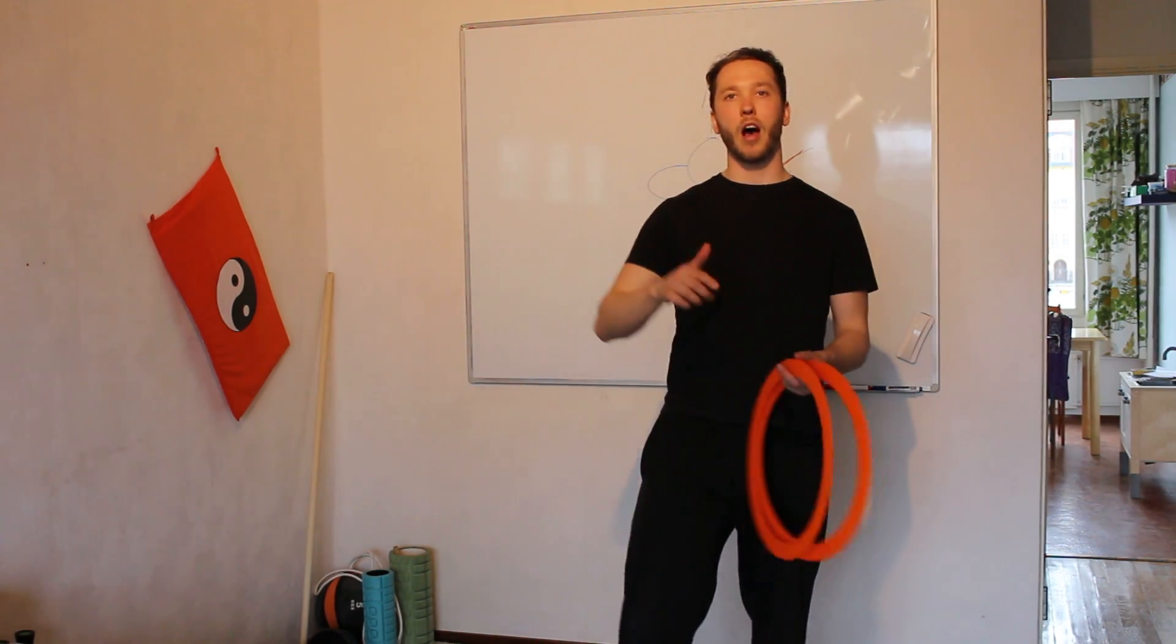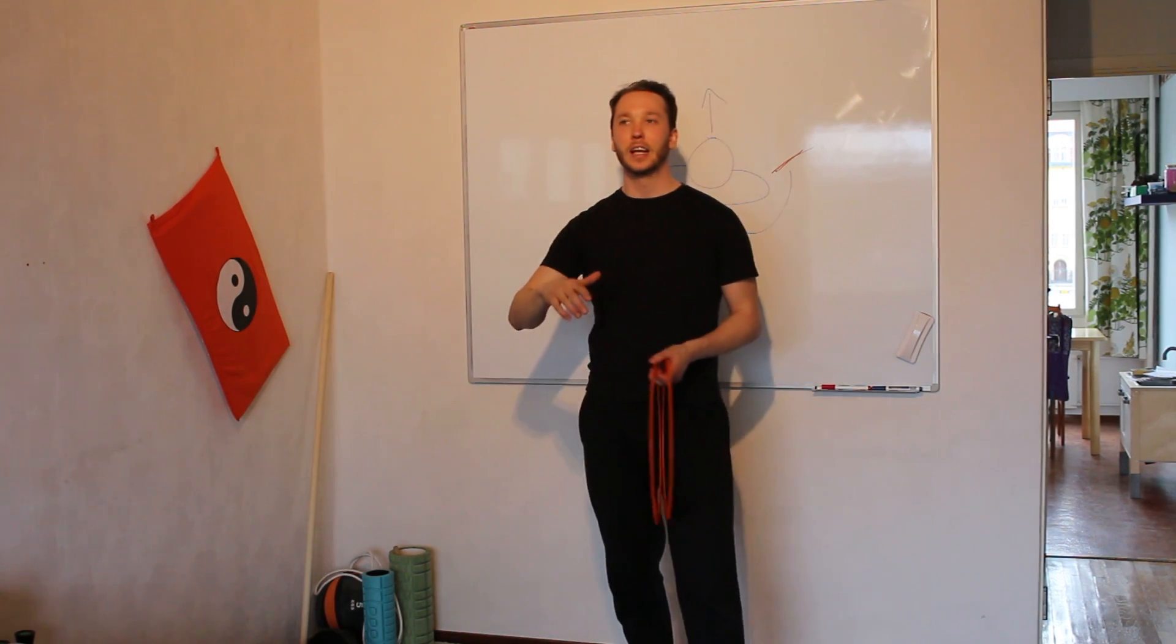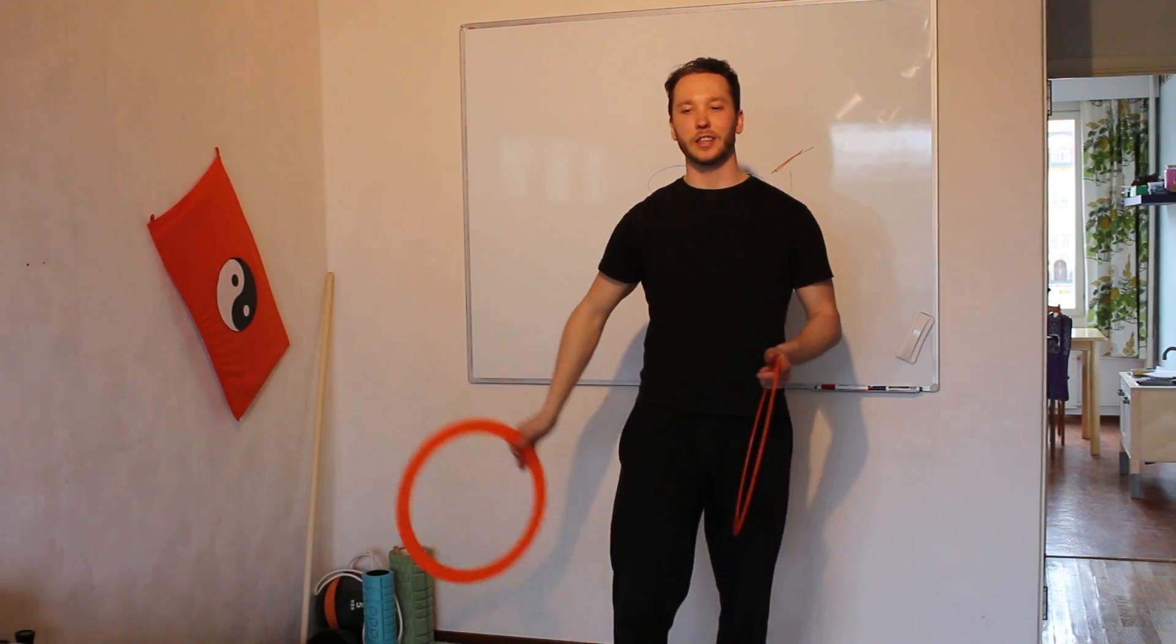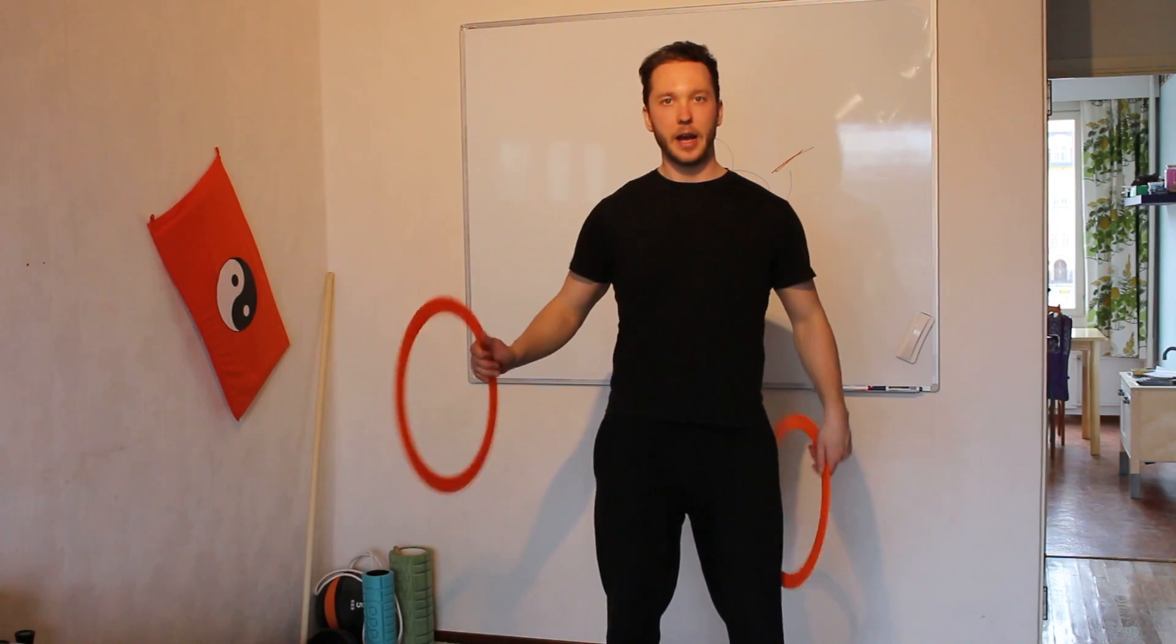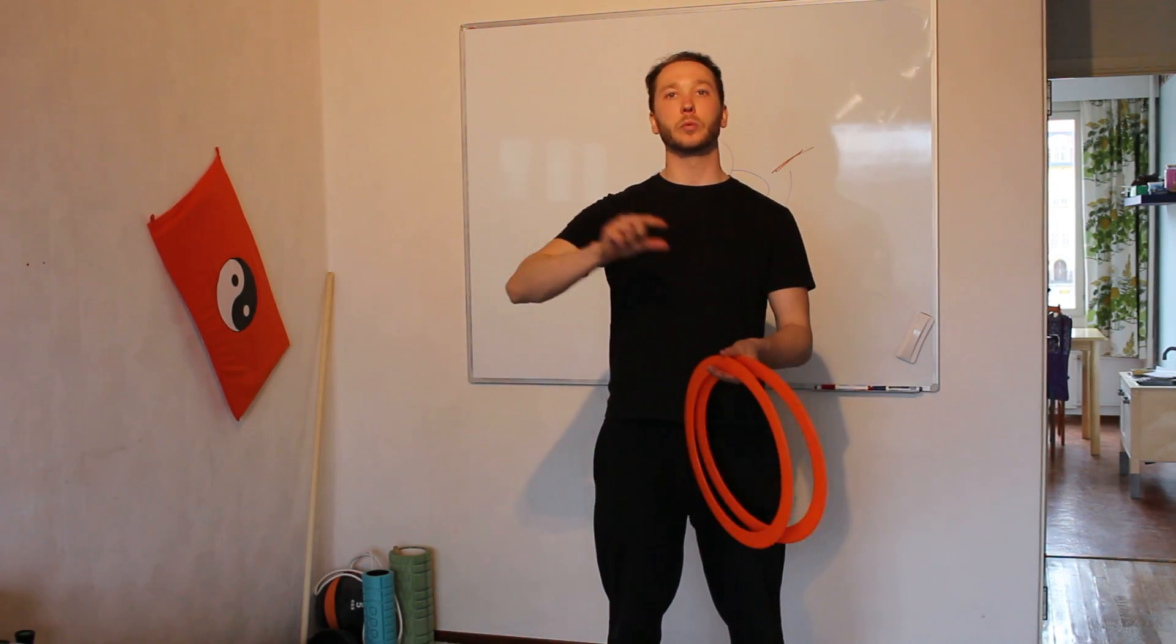So you throw as late as you can. This is how you buy yourself time into the three ring pattern. So you practice doing it as slow as you can, because when you do it with three, usually you run out of time.